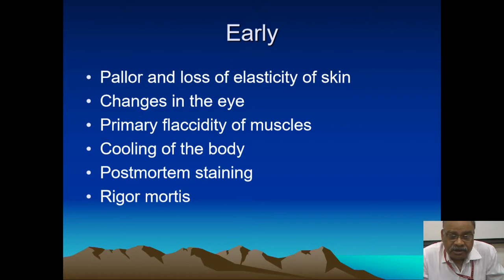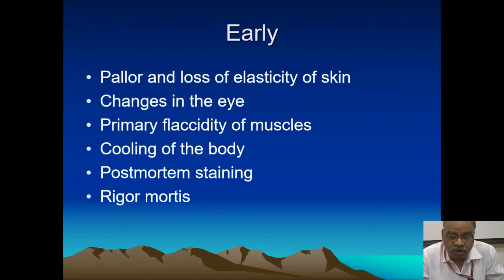This phenomenon is called Tache Noire (T-E-C-H-E-N-O-I-R). Primary flaccidity of muscles: immediately after death, all muscles of the body are flaccid, so the body can be molded into any posture. Criminals use this initial phase to put bodies in bags, suitcases, or a particular posture to dump the bodies and conceal crimes.